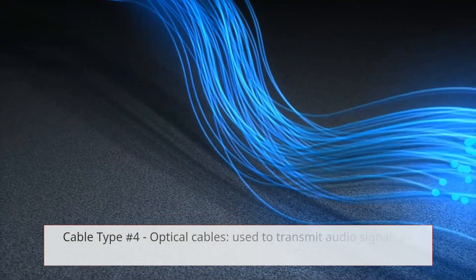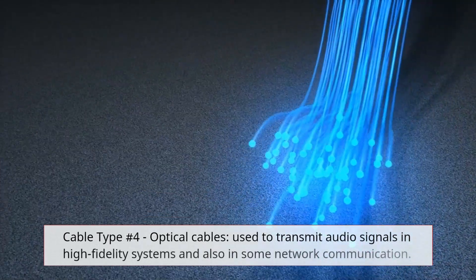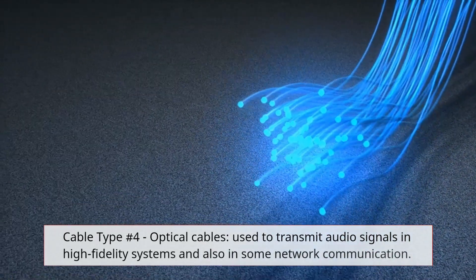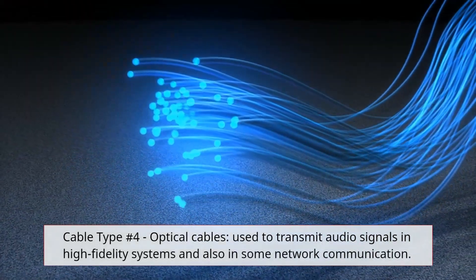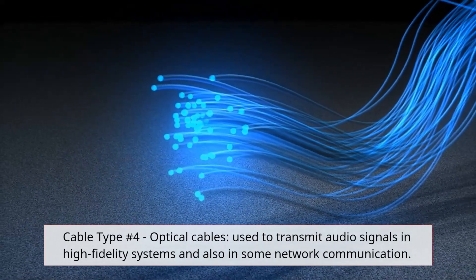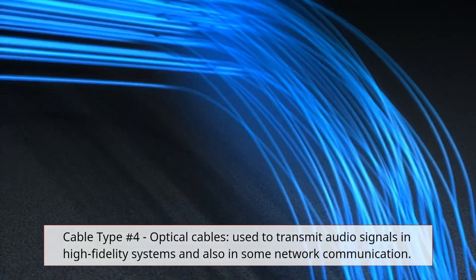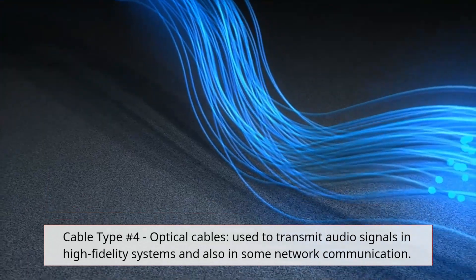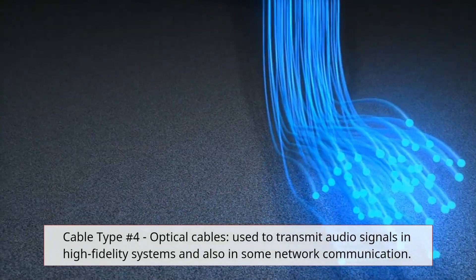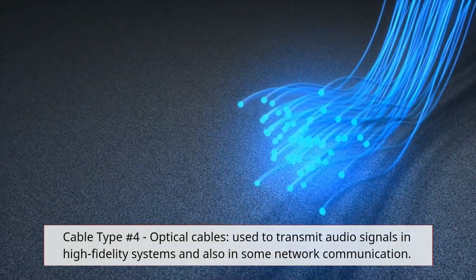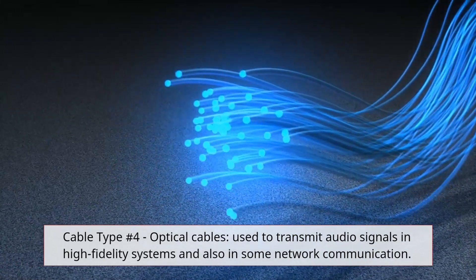Cable type number four, optical cables. Optical cables, also known as TOS-Link cables, are used to transmit audio signals in high fidelity systems and also in some network communication. They use light to transmit the signal, which provides better quality and longer distance transmission.